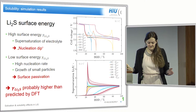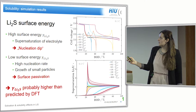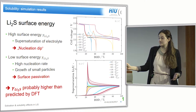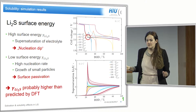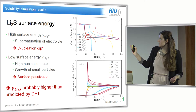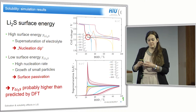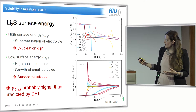We also performed a parameter study on surface energy. Only when the surface energy is taken as one order of magnitude larger than the DFT data do we get the nucleation dip. We interpret this as an indication that DFT data underestimates the actual surface energy. For high surface energy values you get supersaturation of the electrolyte, whereas for low surface energy you get many small particles growing together, passivating the surface and forming a film.